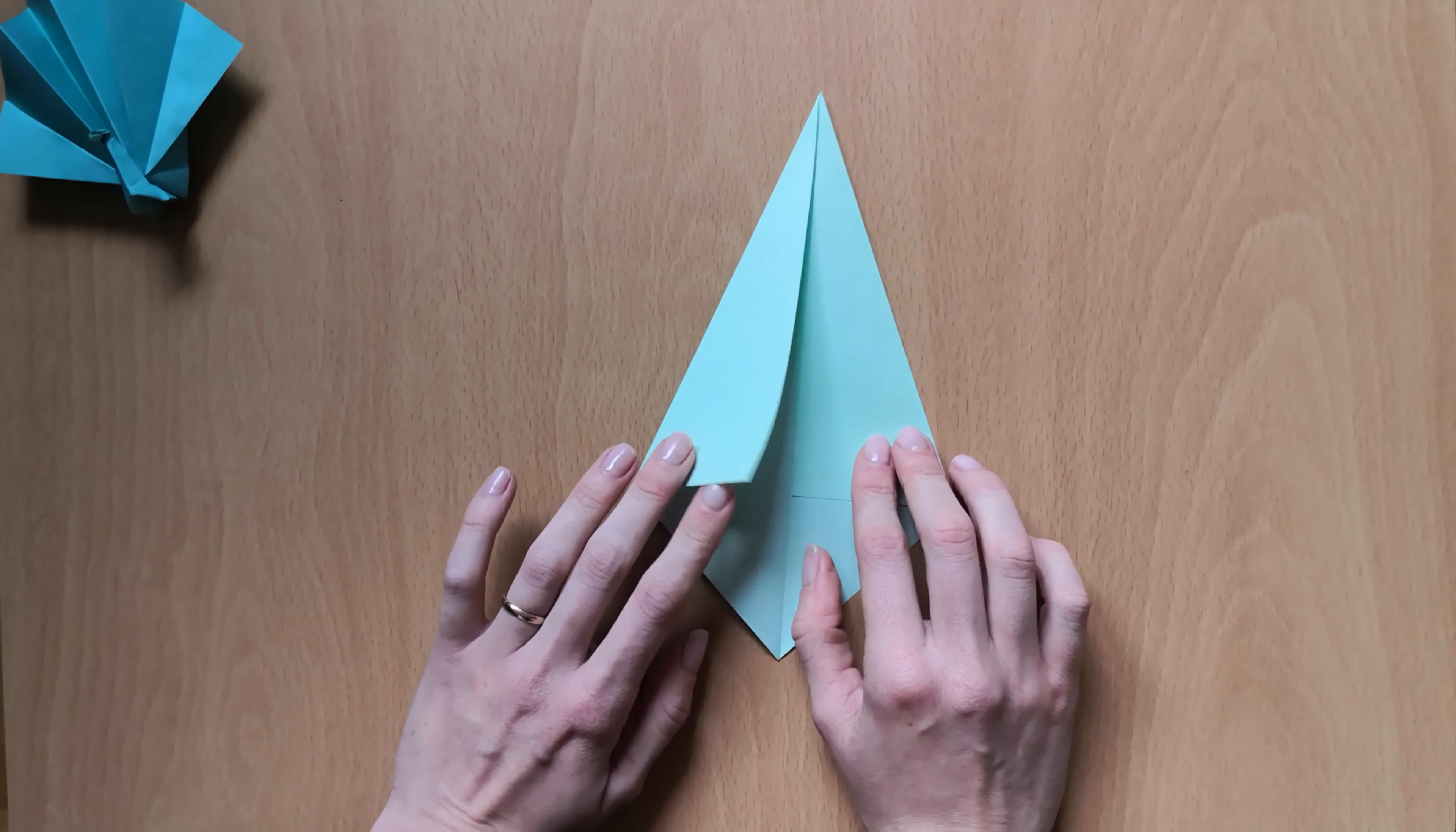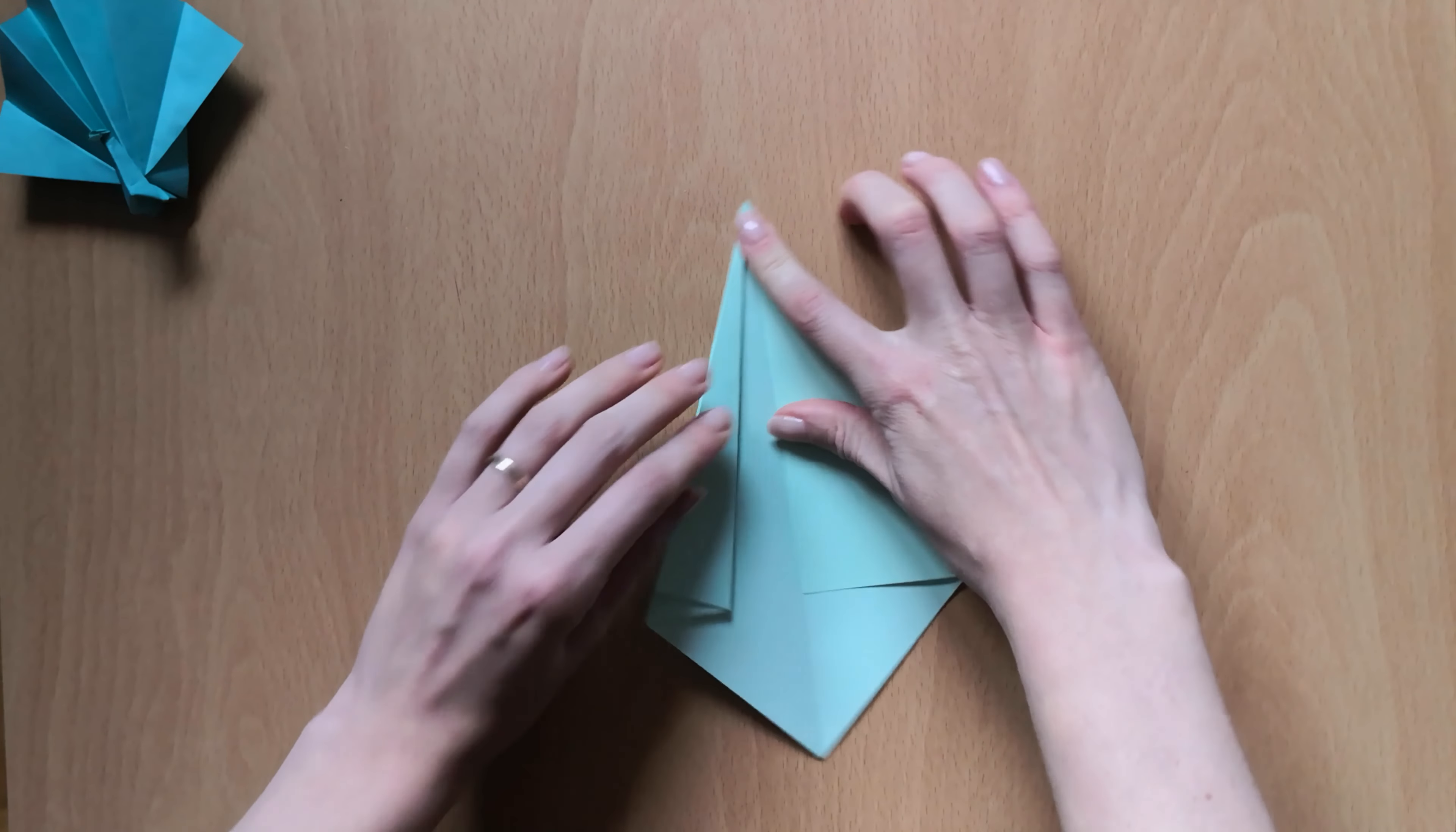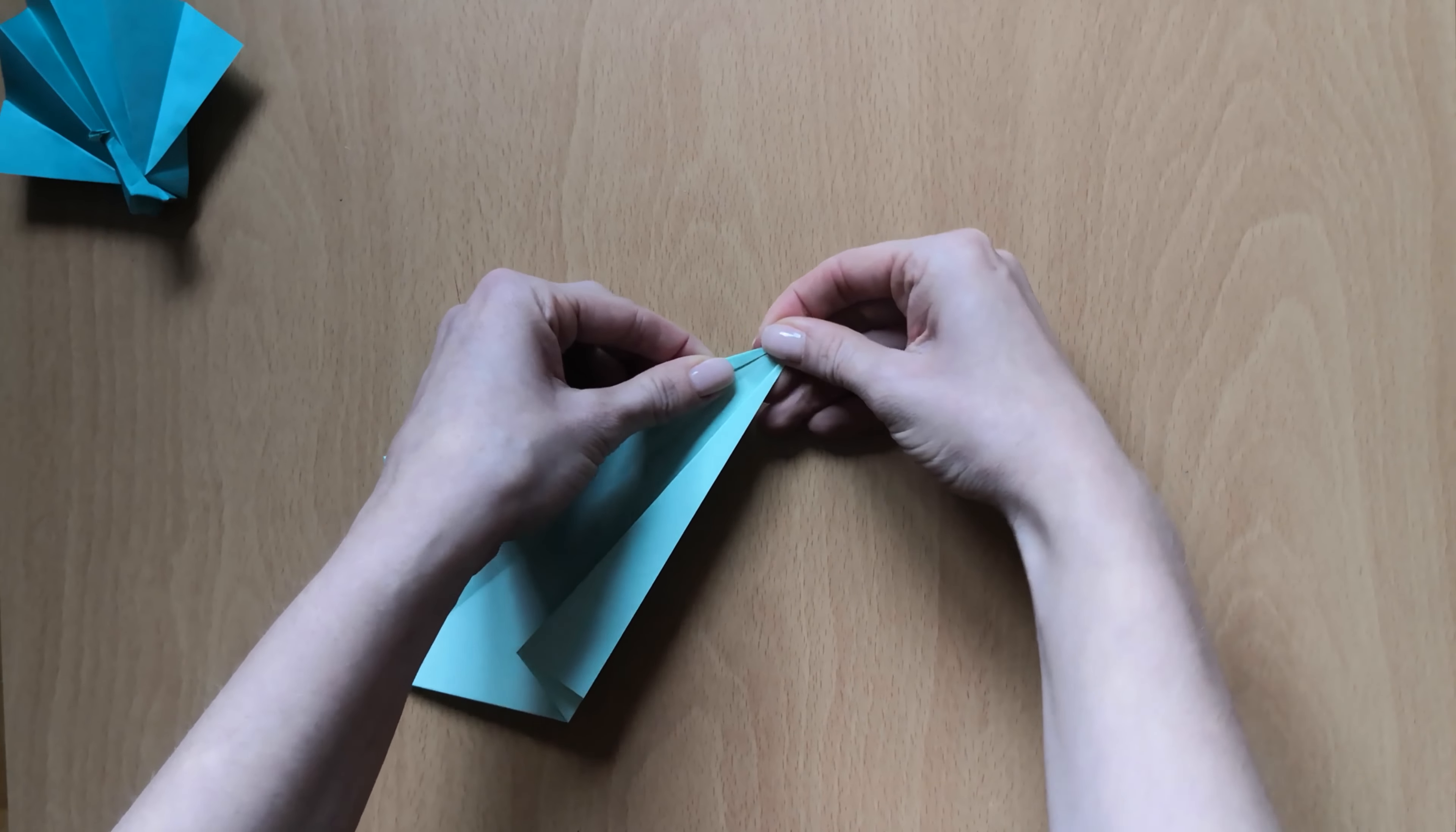Now we'll fold this top layer again in half, so we'll bring this line of the paper into the outside line. So just fold it in half. And the same on the other side.